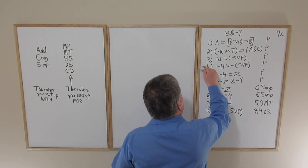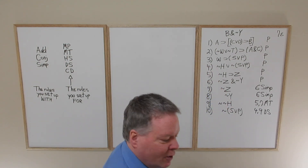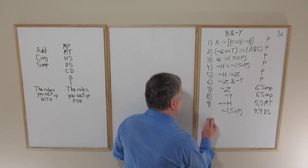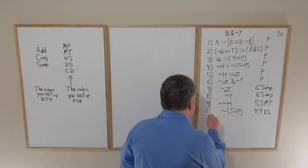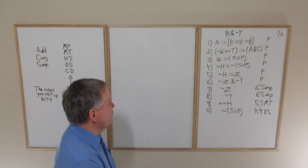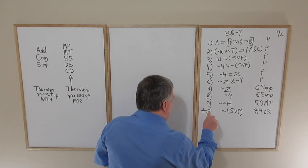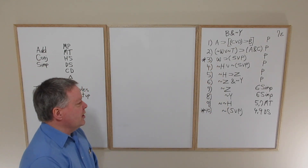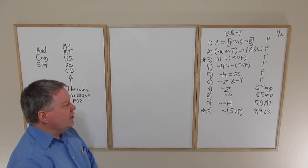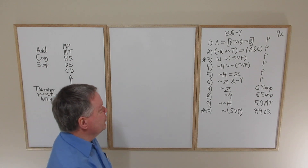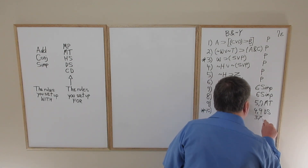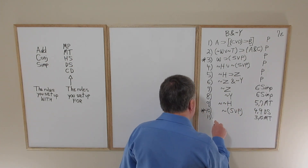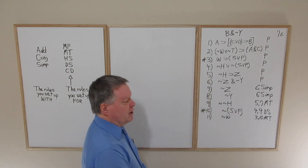We now have ten lines of available data. The sentence pattern that's going to be of use to us here is lines three and ten — this is a modus tollens opportunity. Three, ten modus tollens is going to give us tilde W.